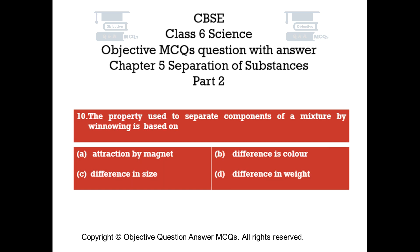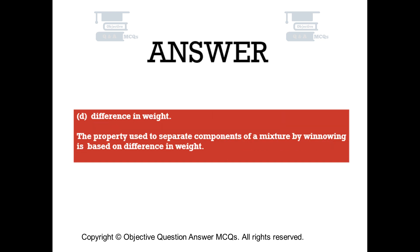Question number 10. The property used to separate components of a mixture by winnowing is based on: Option A, Attraction by magnet. Option B, Difference in color. Option C, Difference in size. Option D, Difference in weight. The right answer is Option D — Difference in weight. The property used to separate components of a mixture by winnowing is based on difference in weight.